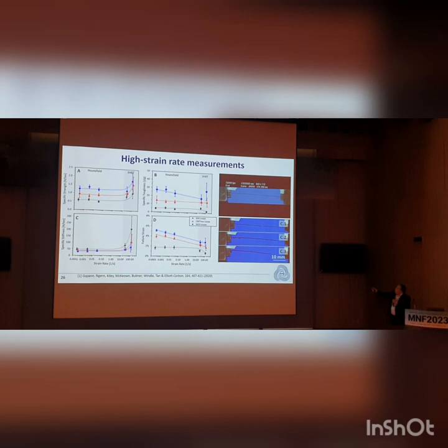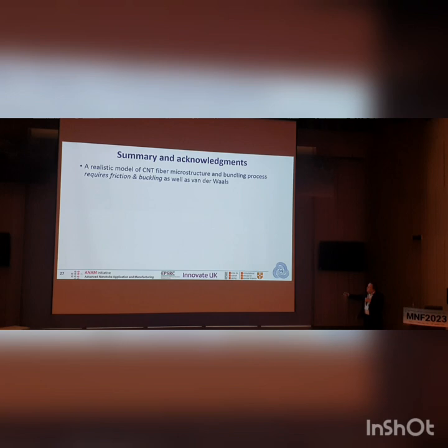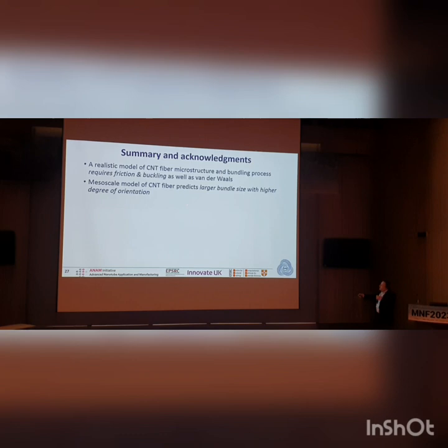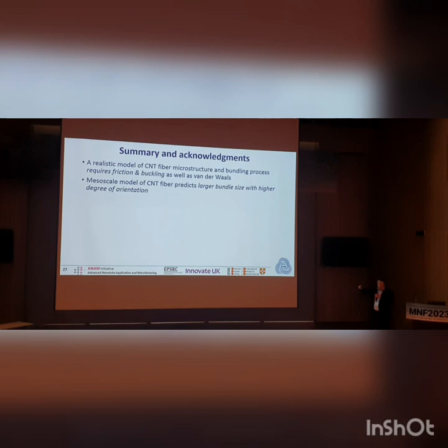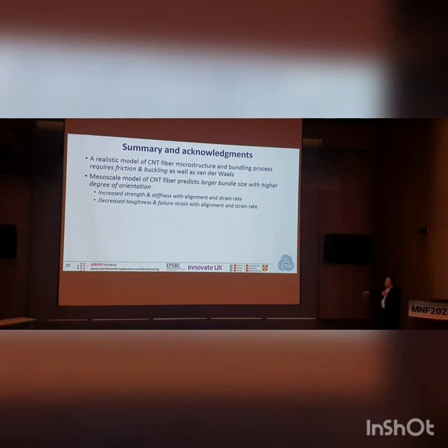The failure mode observed in the high-speed camera footage looks very reminiscent of the simulations shown earlier. To summarize: we now have a realistic model of the fiber microstructure. For realistic simulation you need friction and buckling as well as van der Waals stickiness to get the junction and bundling behavior right. The mesoscale model predicts that larger bundle size occurs with higher orientation — so there's an indirect effect of orientation on bundle size as well as the direct effect.